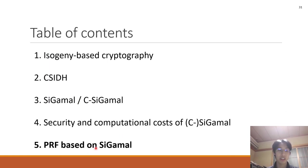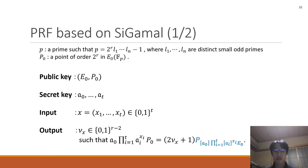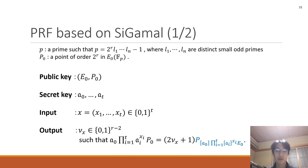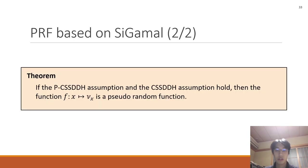And finally, I explain the PRF based on C-GAMMA. I explain the pseudorandom function based on C-GAMMA. The public key is E0 and P0. The secret key is ideal classes R_0 to R_t. And this is the input. The output is the new x-coordinate. It satisfies this equation. This is our proposed new pseudorandom function. If the PC-SSDDH assumption and DDH assumption hold, then the function F is a pseudorandom function. The DDH assumption here is the security assumption for CSIDH. So our proposed function is a pseudorandom function.